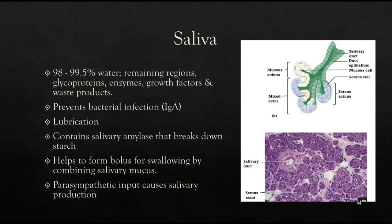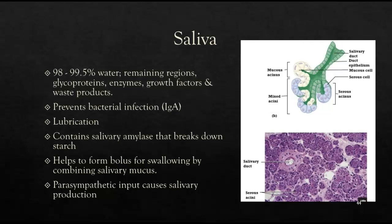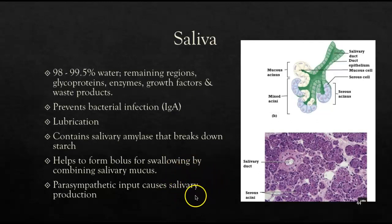Saliva is made up of 98 to 99.5% water, and also contains glycoproteins, enzymes, growth factors, and waste products. An important immune factor in saliva is IgA, an immunoglobulin A antibody that helps prevent bacterial infection. Saliva provides lubrication to avoid damaging oral tissue and helps pull food together. Salivary amylase is secreted to break down starch, and the mucus portion helps form the bolus for swallowing. Salivary production is driven by parasympathetic input.